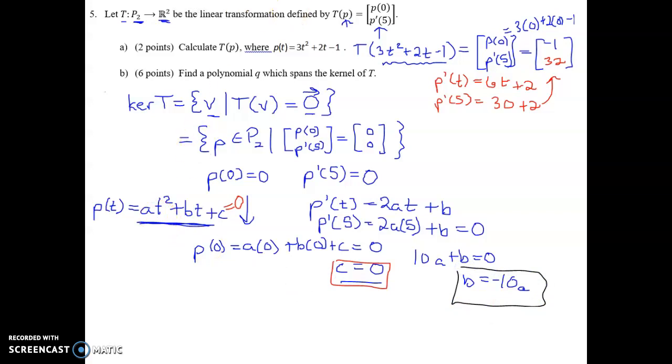Okay, so that means that this polynomial here, if P is in the kernel, then P of T must equal some number A times T squared. And then B, which is equal to negative 10A, negative 10A times T.